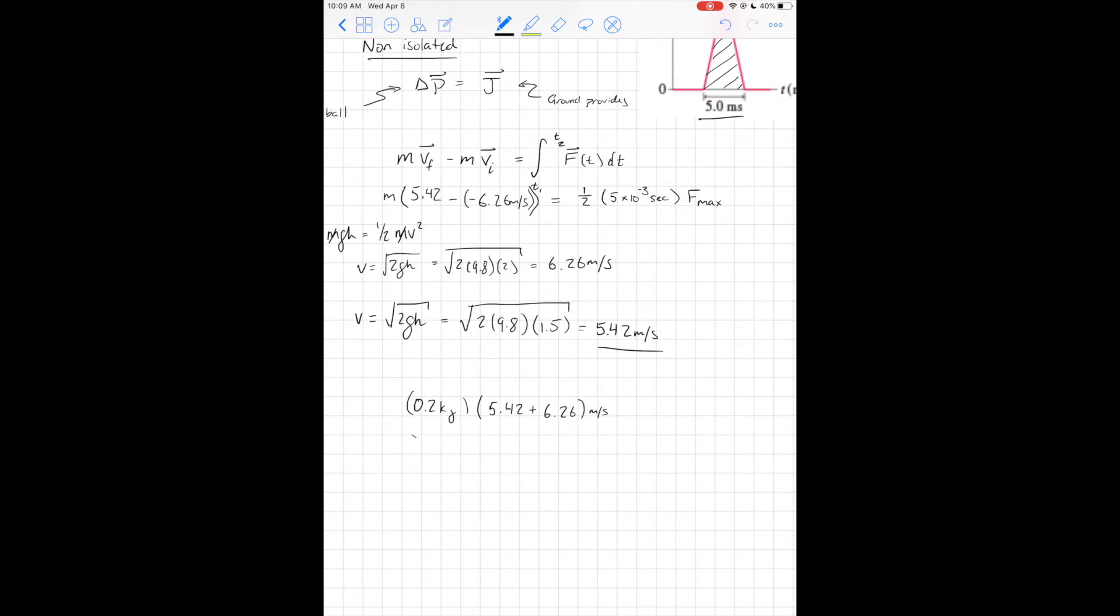Times 5.42 plus 6.26, that's meters per second, divided by my one half times five times 10 to the negative third seconds. If I think about this, I'm going to get kilograms meters per second squared, and that's a newton. So that equals my F_max.